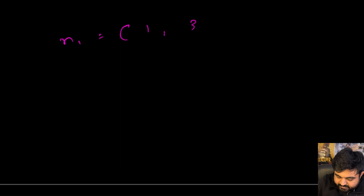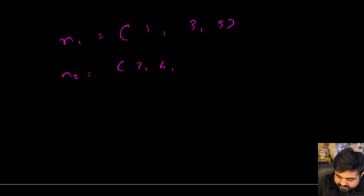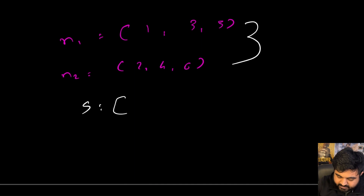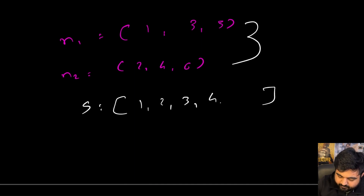Let's understand this with an example. Suppose we are given Nums1 as [1, 3, 5] and Nums2 as [2, 4, 6]. We need to create a sorted array that is a combination of these two, and the answer is going to be [1, 2, 3, 4, 5, 6].